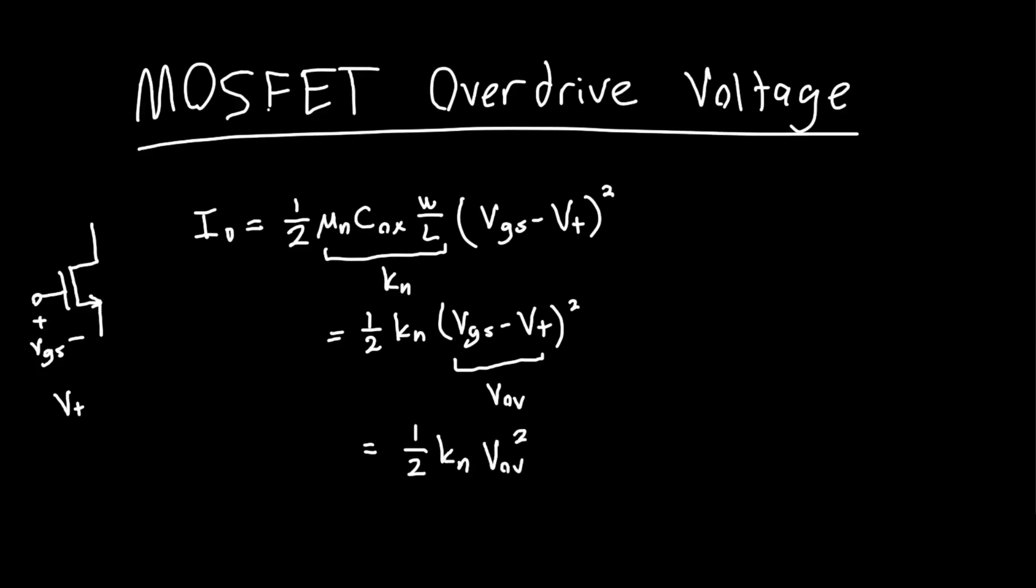It becomes this beautifully simple and elegant equation, just involving two single variables, KN and the overdrive voltage VOV. But why is VOV useful?